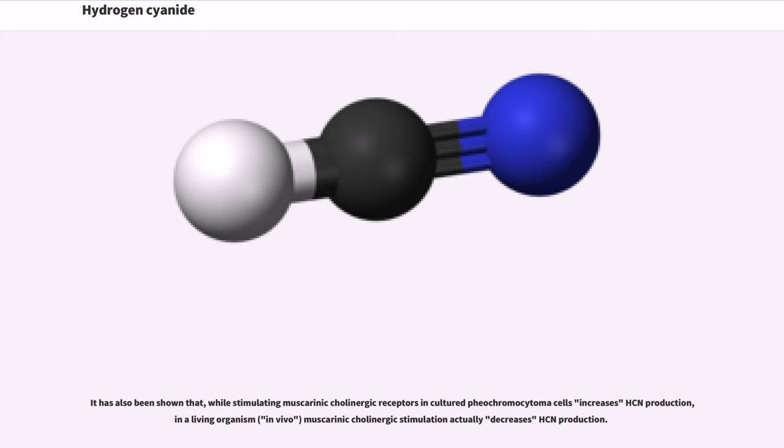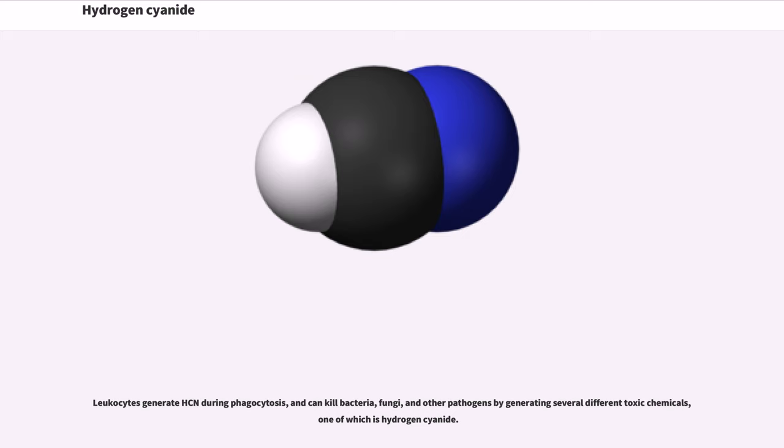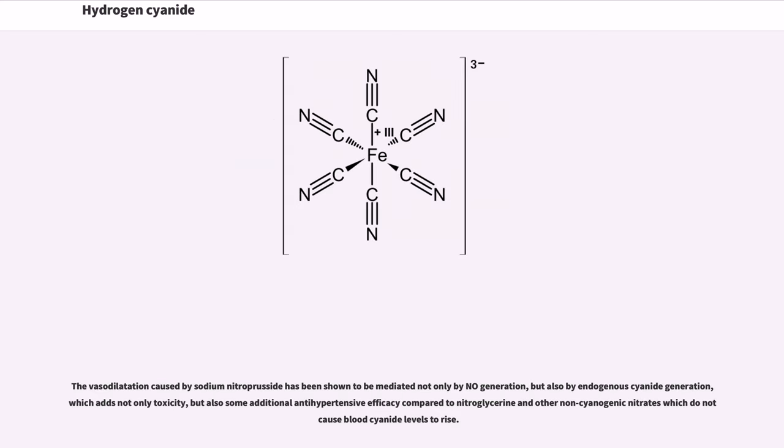It has also been shown that while stimulating muscarinic cholinergic receptors in cultured pheochromocytoma cells increases HCN production, in a living organism muscarinic cholinergic stimulation actually decreases HCN production. Leukocytes generate HCN during phagocytosis and can kill bacteria, fungi, and other pathogens by generating several different toxic chemicals, one of which is hydrogen cyanide. The vasodilation caused by sodium nitroprusside has been shown to be mediated not only by NO generation but also by endogenous cyanide generation, which has not only toxicity but also some additional antihypertensive efficacy compared to nitroglycerin and other non-cyanogenic nitrates.